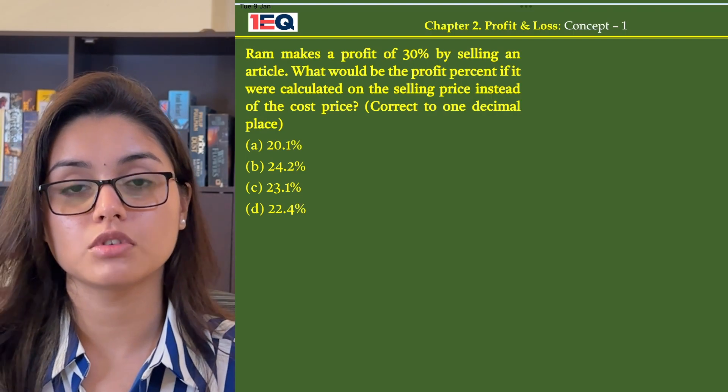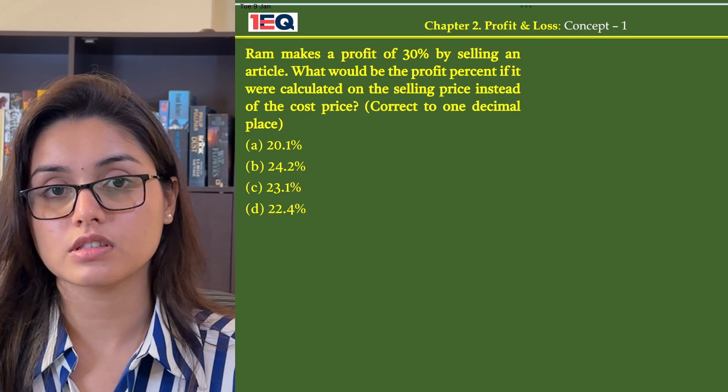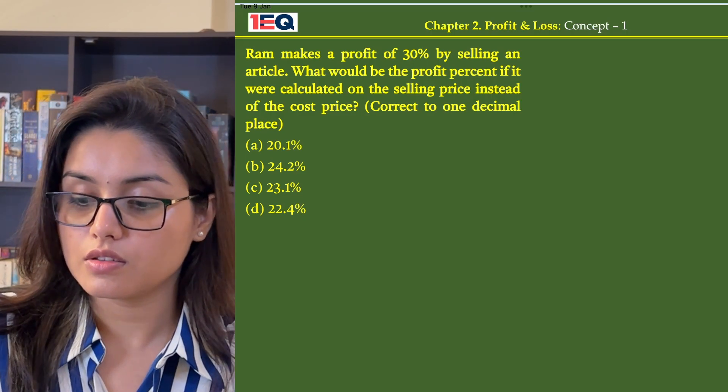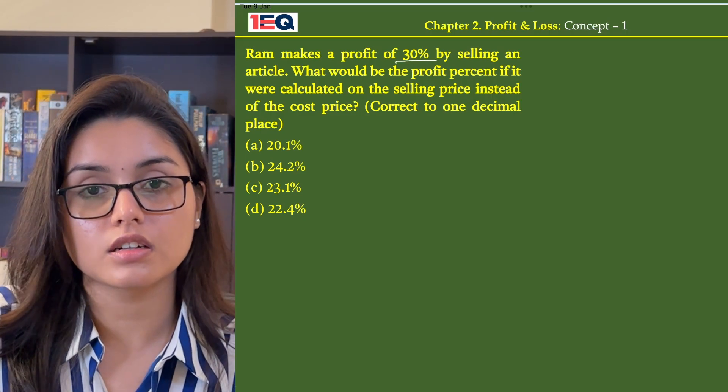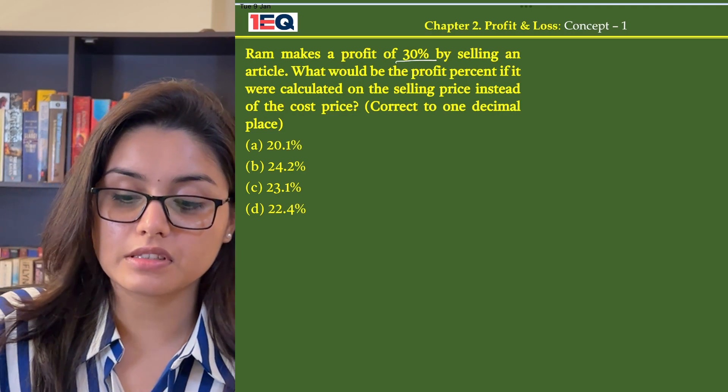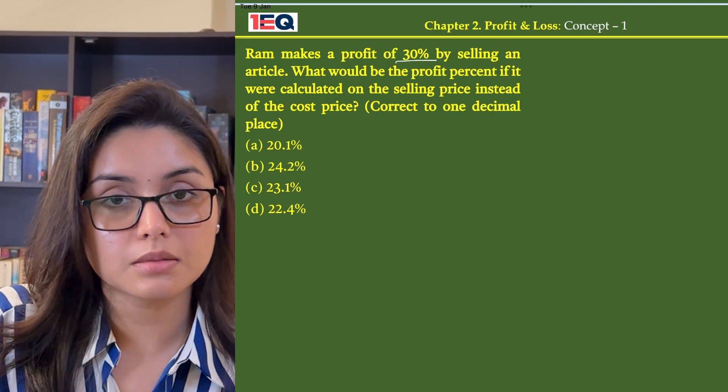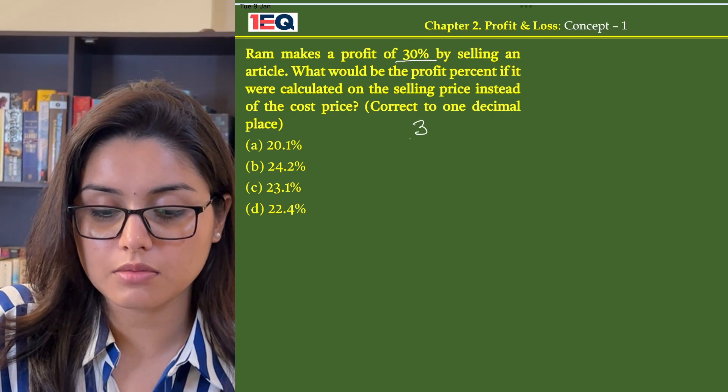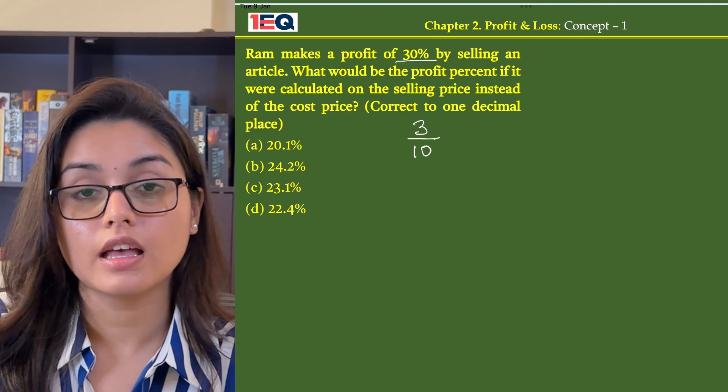In the given question, Ram earns a profit of 30% on selling the article. Now a 30% profit would mean 30 by 100, or simply 3 by 10.